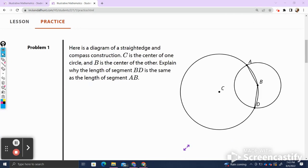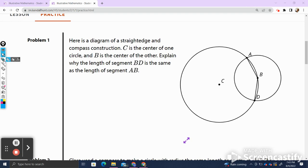Problem number one. Here's a diagram of a straightedge and compass construction. This means somebody drew the circles using a compass and the lines using a straightedge, such as a ruler, to create this figure. C is the center of one circle, so that's right here, and B is the center of the other, right over there. Explain why the length of segment BD is the same as the length of segment AB. So I'm going to look at BD and I'm going to highlight it so it's clear what I'm looking at. Then I'm going to look at the length of segment AB and I'm going to highlight it.